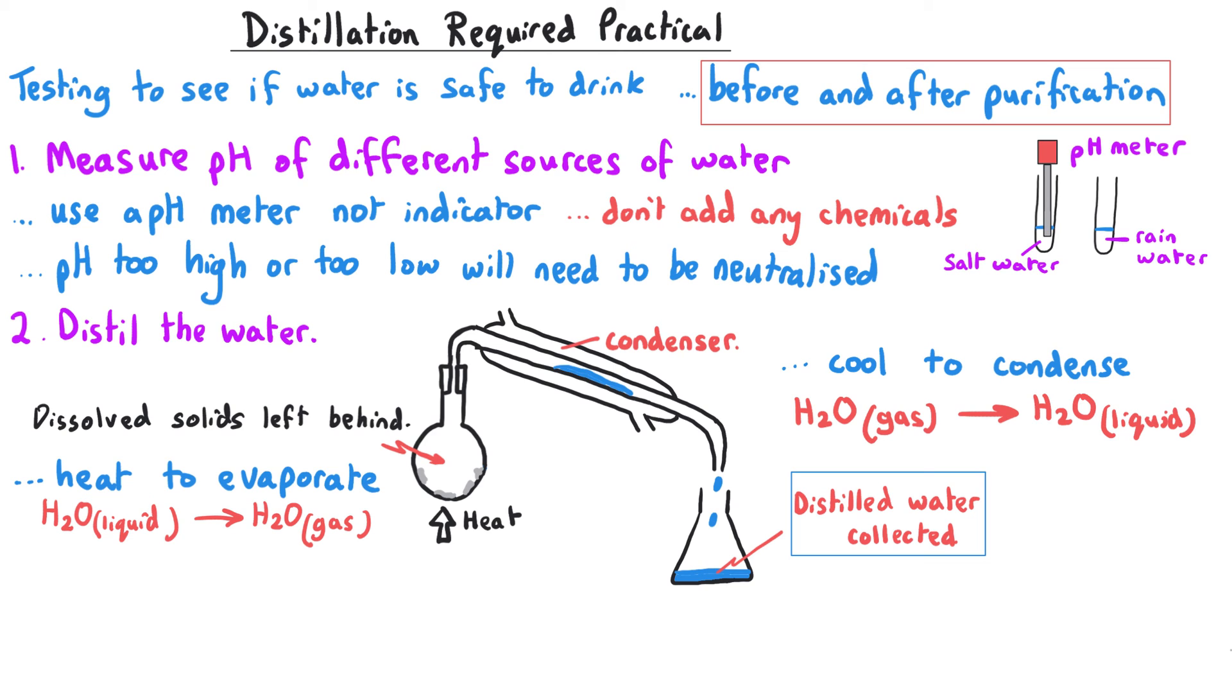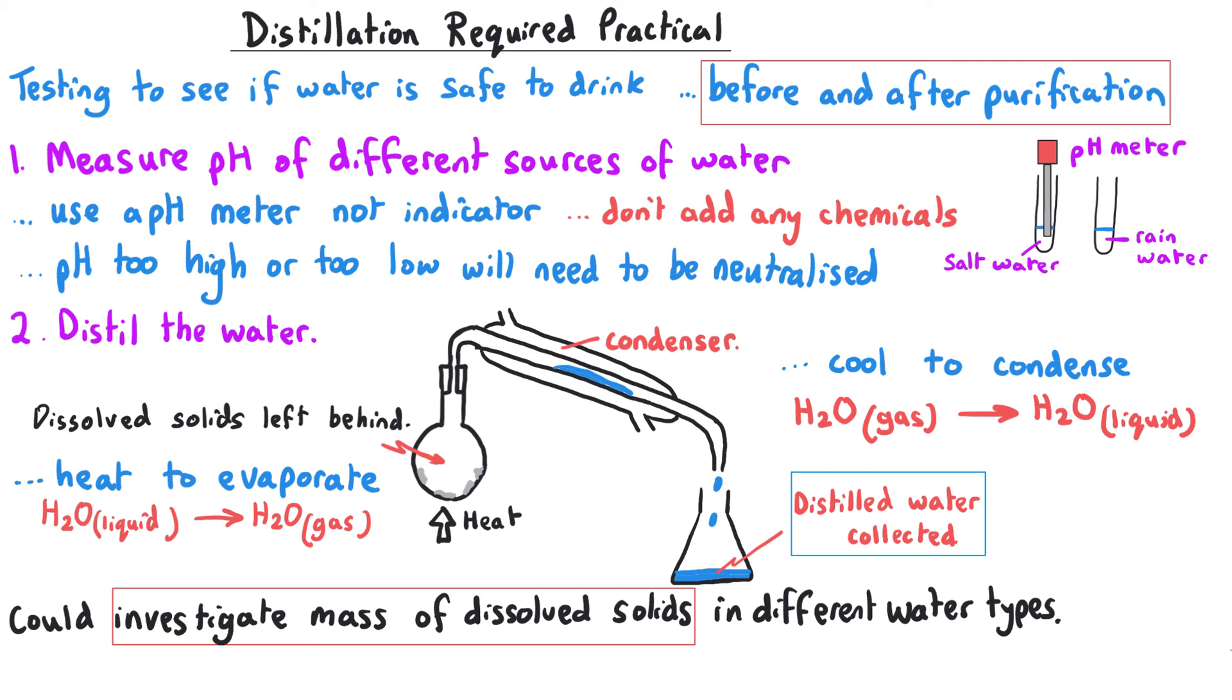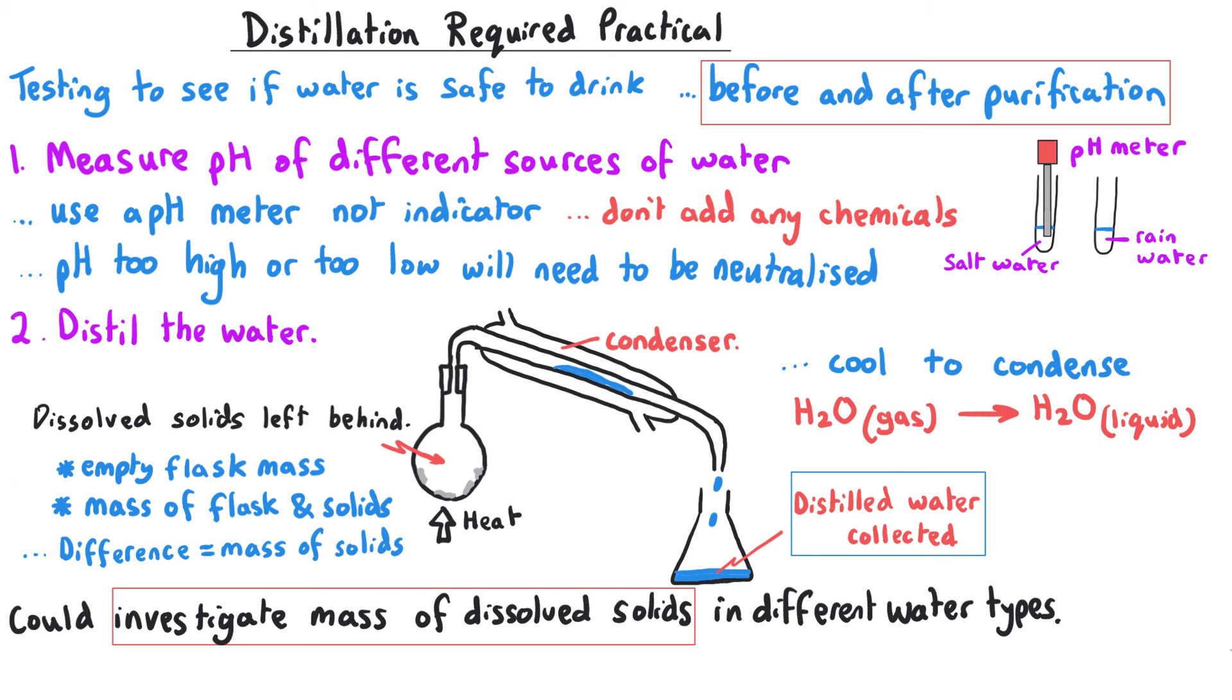An exam question might get you to investigate how the mass of dissolved solids varies from different water types. To do this, they would tell you the mass of the container with the water before we start, then the mass of the container with the solids afterwards. You would work out the difference or increase in mass, and that would tell you the mass of solids that had been dissolved in the water in the first place.